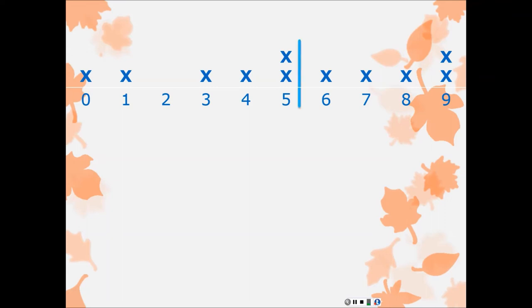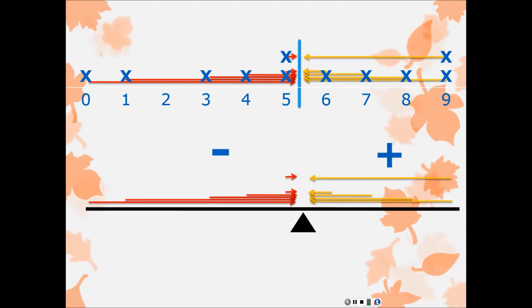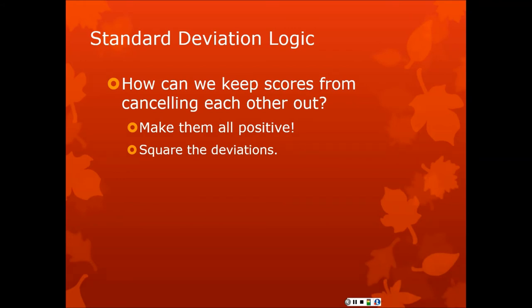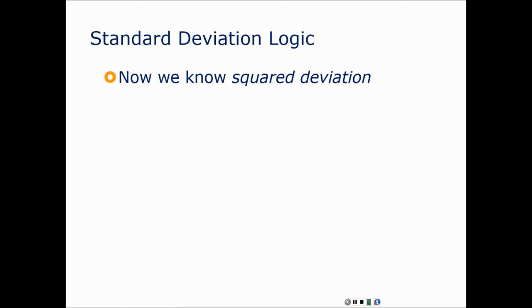You can look at this example — here's the mean and all the deviations of each score from the mean score. That will always balance, as long as you calculated the mean in the classic standard way. So how do we keep the scores from canceling each other out? We can just make them all positive. The easiest way would be to take the absolute value — that gives you the median absolute deviation, which is a great measure of variability. Or we can square all the deviations, which also makes them all positive. That's what classic statistics does, because the sum of squared deviations is foundational to many statistics. That concept is called the sum of squares.